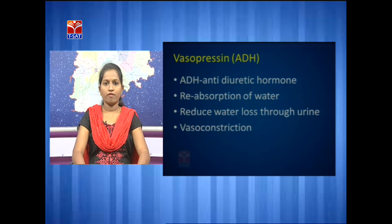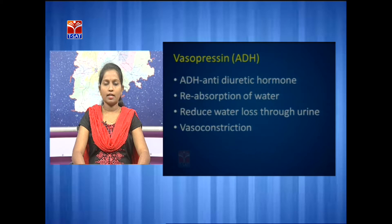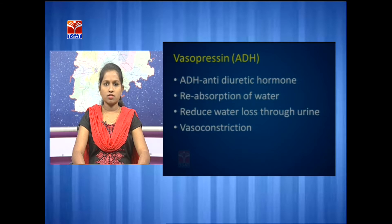The next hormone is vasopressin, also called antidiuretic hormone. The name antidiuretic hormone is given based on its function. It helps in the reabsorption of water from the urine through the distal convoluted tubule and collecting duct of nephrons. The water is reabsorbed and the urine becomes very hypertonic — that condition is called diuresis, hence the name antidiuretic hormone. During diuresis, blood vessels get contracted, which increases blood pressure — that is why the name vasopressin.